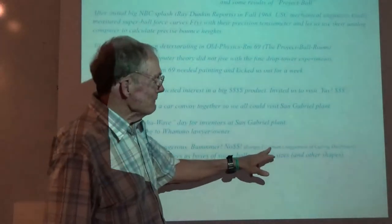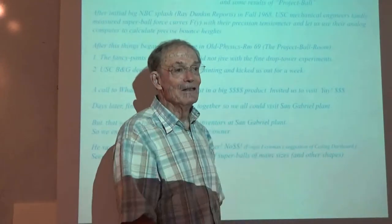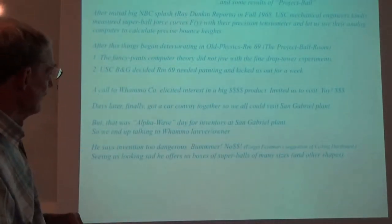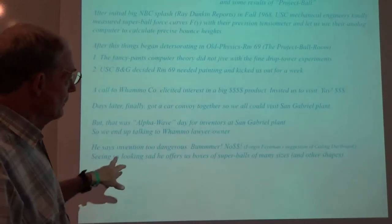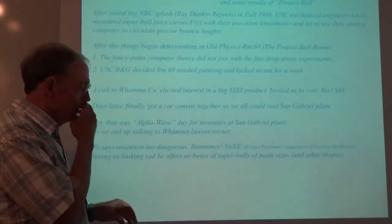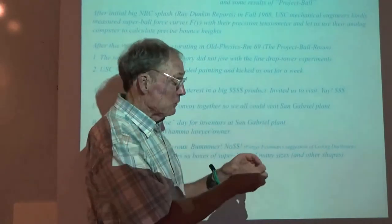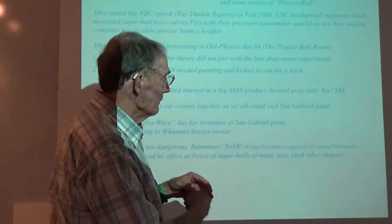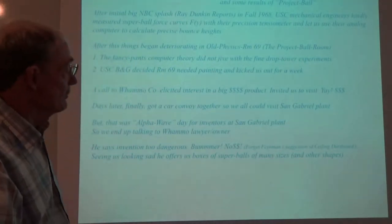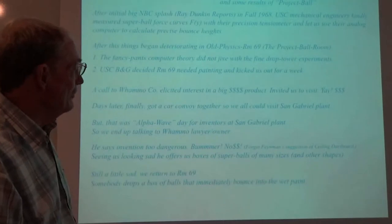I didn't even mention what Feynman suggested when I showed him this — he suggested we could do ceiling dart boards. That obviously was not going anywhere. People were starting to be safety-conscious by that point in the 60s. So the lawyer saw us looking kind of sad and remembered that they had boxes of reject Super Balls from various experiments. So we got a whole bunch of Super Balls. That was what we were doing with the experiments — dropping them. After a while one would shatter and you'd need a new one. And so that was good — we could do more experiments.